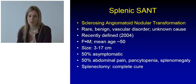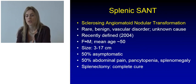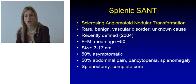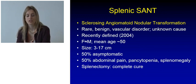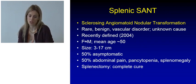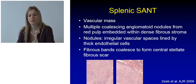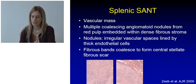Sclerosing angiomatoid nodular transformation, better known as SANT, is a rare benign vascular disorder described only about 10 years ago. Initial reports suggested a high female prevalence, but as case numbers increase the gender difference is evening out. These are large lesions that in half of cases are diagnosed because they cause abdominal pain, pancytopenia, and splenomegaly. Splenectomy is the complete cure. SANT is a vascular mass made of multiple angiomatoid nodules with a dense fibrous stroma, and these fibrous bands coalesce to form a central stellate fibrous scar.